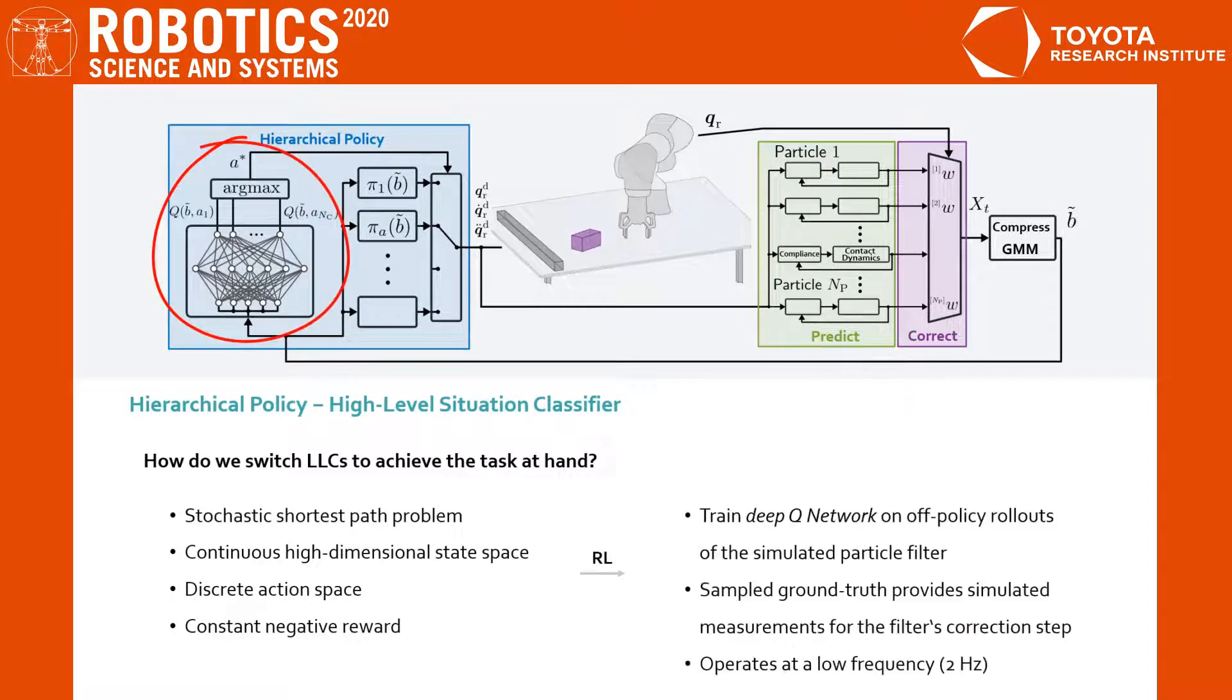We train a deep Q-network on off-policy rollouts of the simulated particle filter. A ground-truth candidate sampled from the initial belief provides the measurements for the filter's correction step. The network now switches the motion controllers based on the present compressed belief at 2 Hz.